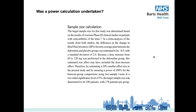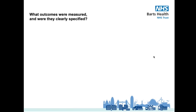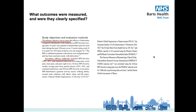Our next question asks: what outcomes were measured and were they clearly specified? You always want to see these reported. The primary outcome was clearly specified from the start. The secondary outcome measures were clearly specified too, and they are clearly stated on page 810 in the methodology section, where you'd expect them.